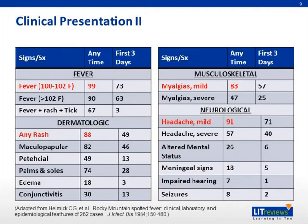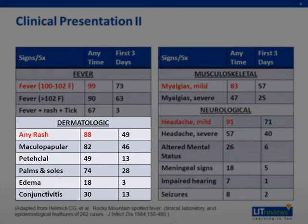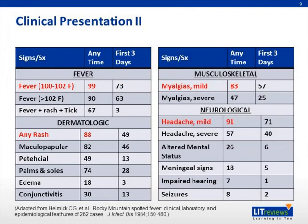The following is a table of symptoms seen in Rocky Mountain Spotted Fever and how frequently those symptoms were observed in a group of 250 patients presenting with the disease, as reported in the Journal of Infectious Disease in 1984. The most common symptoms highlighted in red are fever, rash, myalgias, and headaches. 88% of patients infected with this disease will have a rash, usually maculopapular; however, some rashes will only present as petechiae.